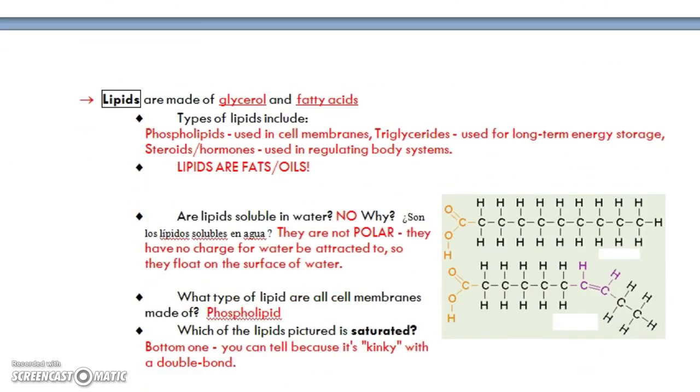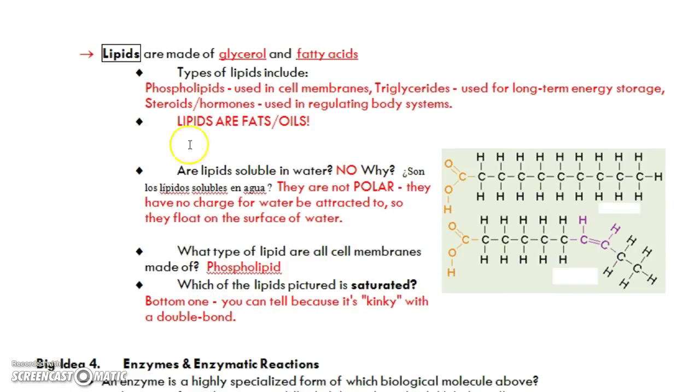And lipids are fats or oils. They are always made of a glycerol and then a number of fatty acids. So we've got phospholipids, which are glycerol, fatty acid, and phosphorus. They're used in cell membranes, which you remember from your crash course video.